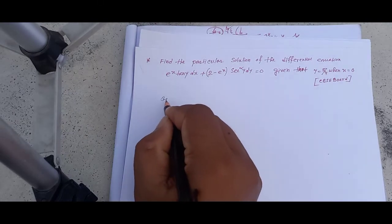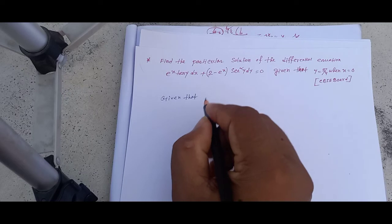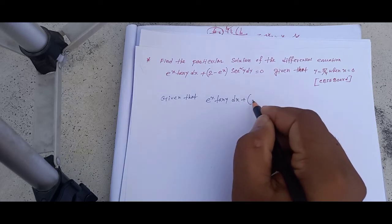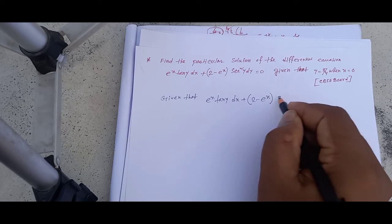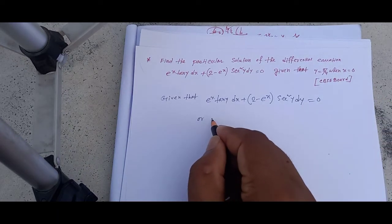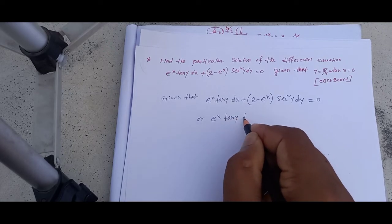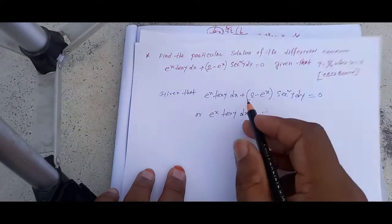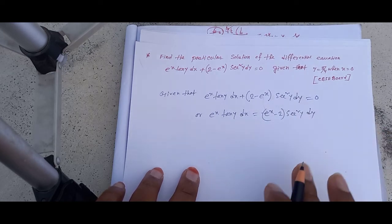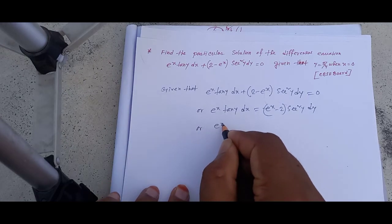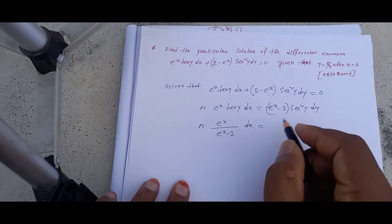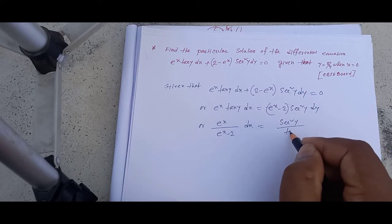Given e to the power x tan y dx plus 2 minus e to the power x sec square y dy equals 0. Rearranging: e to the power x tan y dx equals e to the power x minus 2 sec square y dy. Separating variables: e to the power x divided by e to the power x minus 2 dx equals sec square y divided by tan y dy.